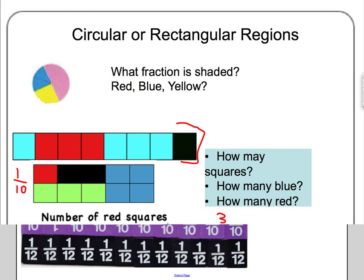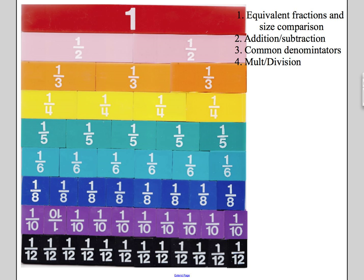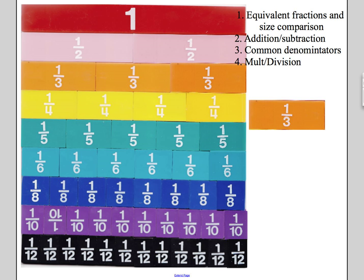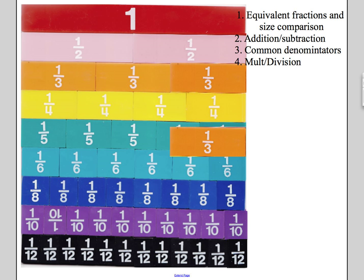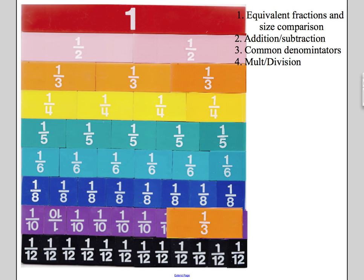We can use fraction pieces to do a number of explorations about fractions, including finding equivalent fractions. To find equivalent fractions, take the fraction piece you want to work with — say one-third — and find what other pieces are equivalent to it. You can see that two-sixths is the same as one-third, and four-twelfths is also the same as one-third.